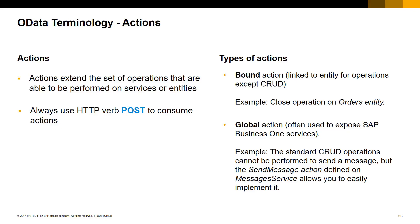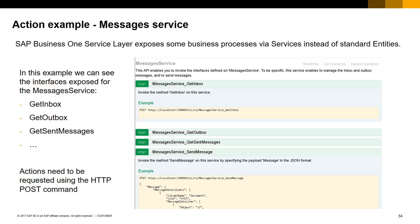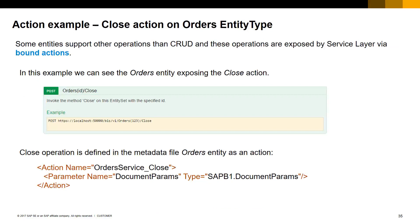Please note that to consume actions you always have to use the HTTP verb POST. Here we have an example of a global action representing the messages service. SAP Business One service layer exposes some business processes via services instead of standard entity types. We can see some of the operations exposed for the messages service like get inbox, get outbox, and get sent messages. These actions need to be requested via the HTTP command POST. A second example of actions is the close bound action supported by the orders entity type. Bound actions, as well as global actions, need to be requested with the HTTP POST command. The parameters will be exposed as part of the action definition.